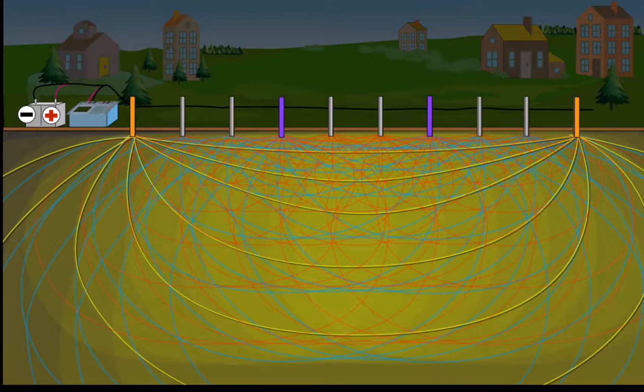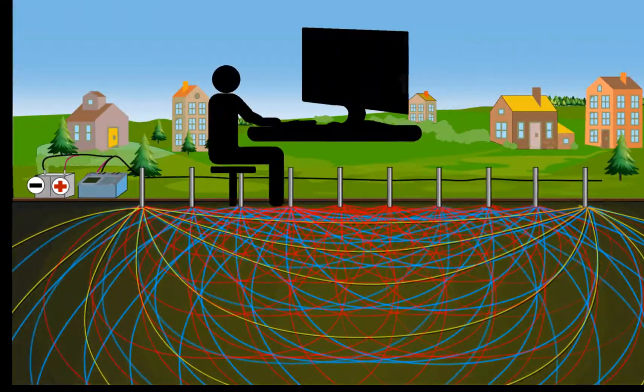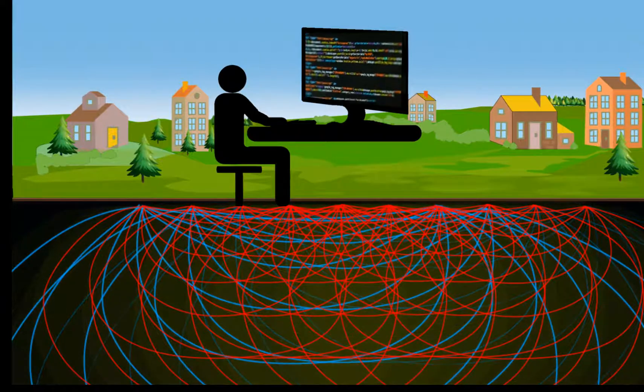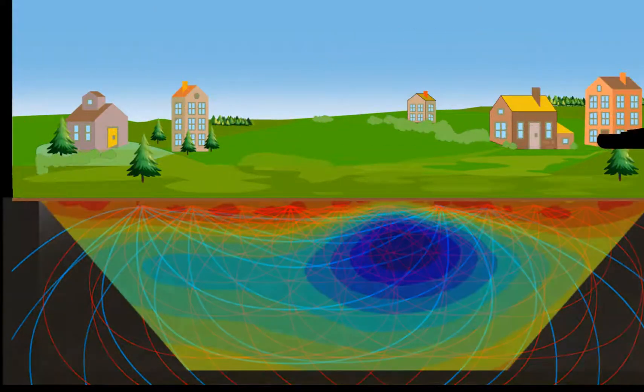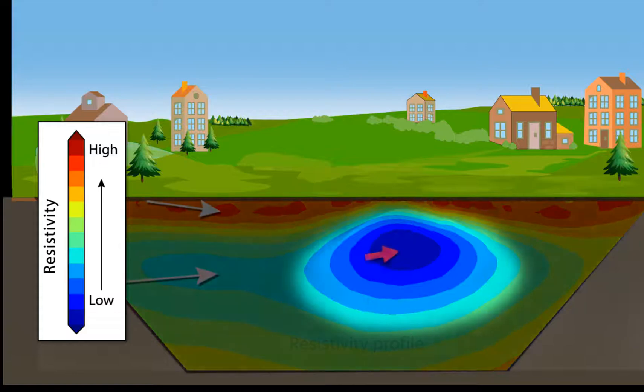Finally, all these readings are put together. A computer runs a calculation called an inversion that determines a resistivity depth profile that would produce all the measured values. The resistivity profile shows areas underground with higher resistivities and lower resistivities.